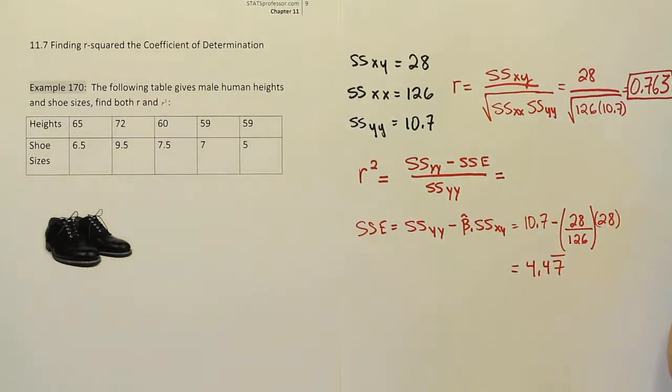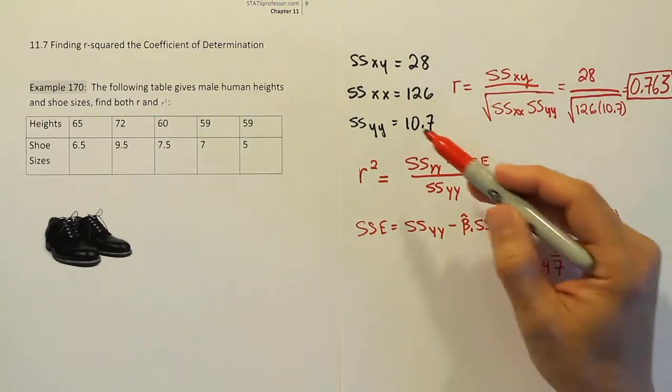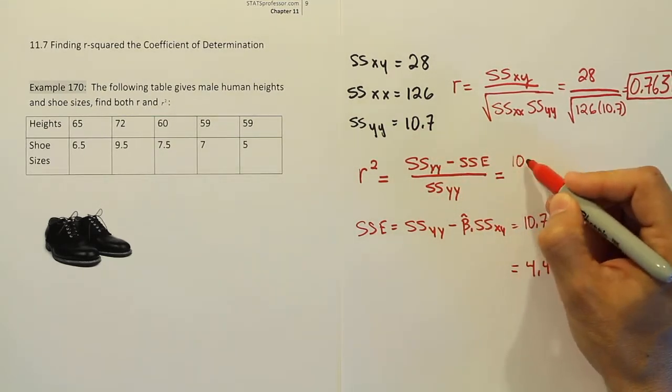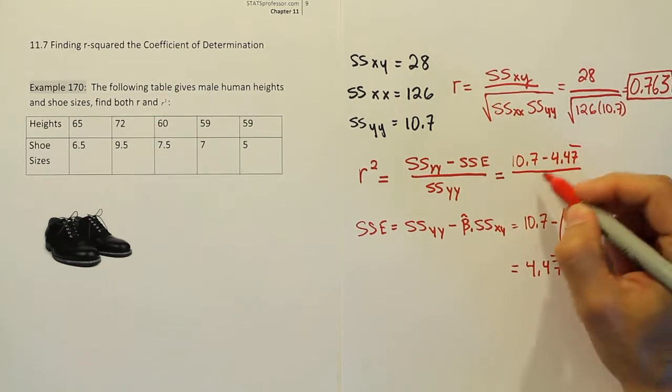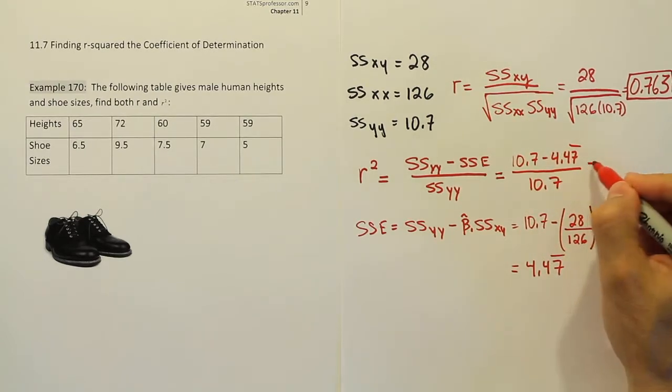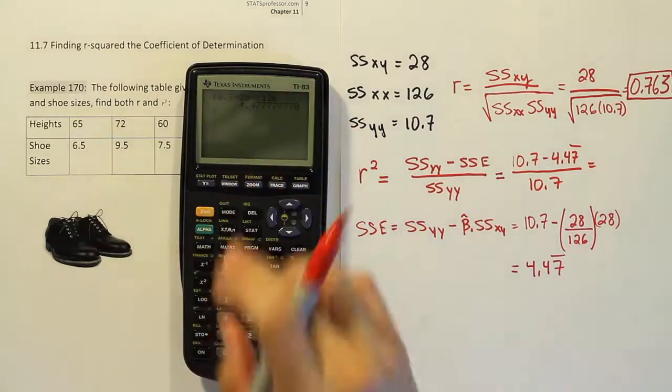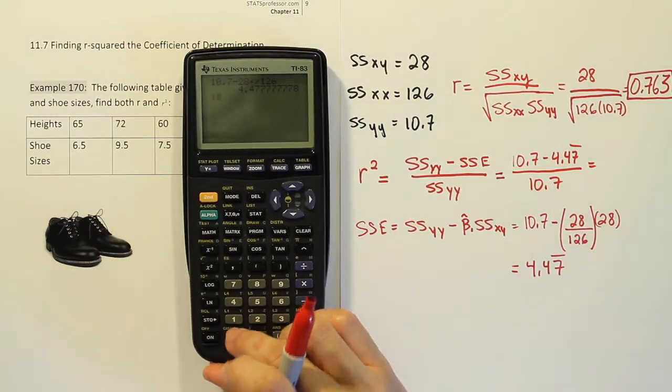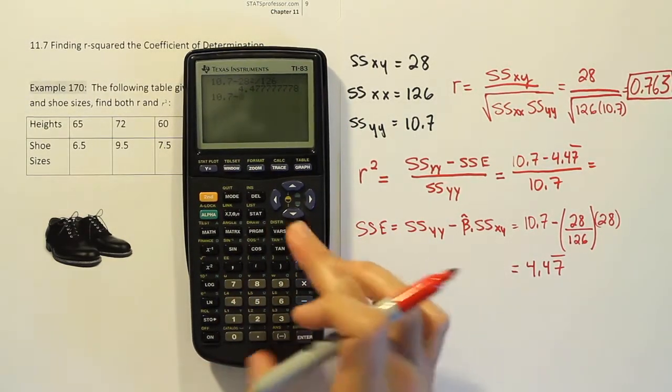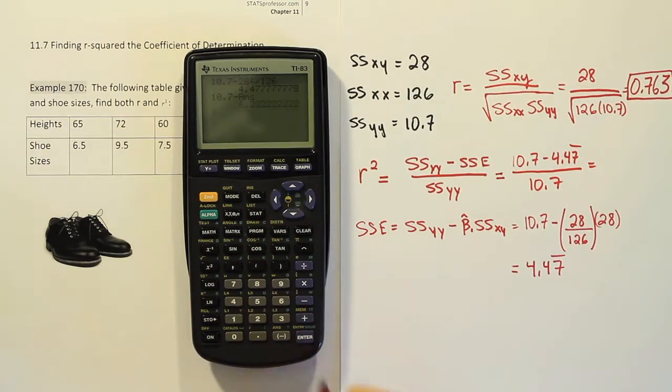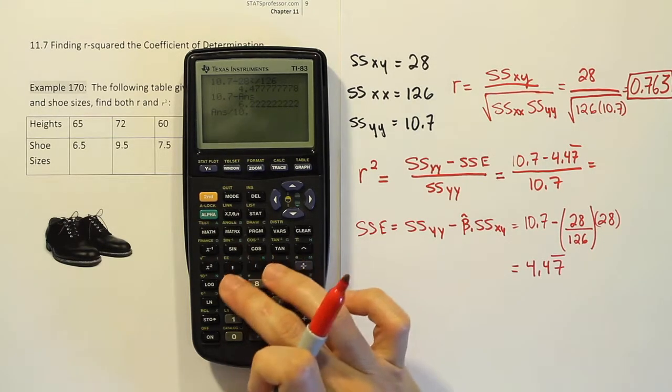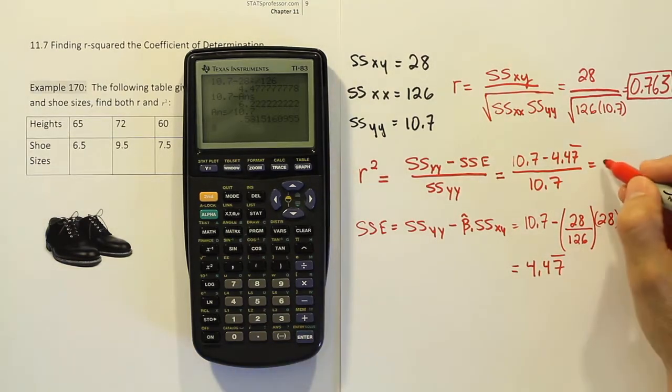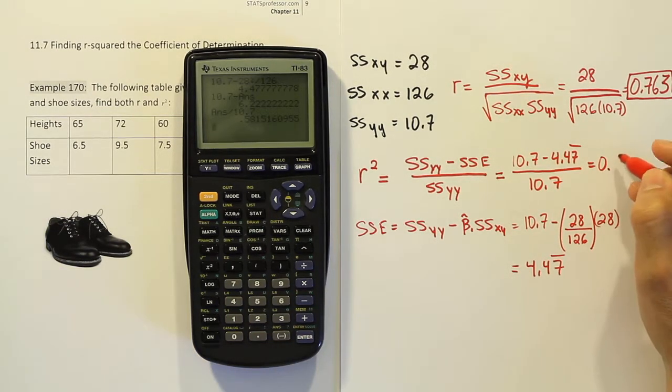All right. Now once we have sse, then we plug that in to finish up the problem. We're going to have the y sum of squares, which is 10.7. We're going to subtract off the 4.47 repeating, and we're going to divide it by 10.7. Let's see what that ultimately gives us for our squared value. So we'll have 10.7, 10.7, minus the quantity we just found. I have that in my calculator still, so I'll just do minus the answer, and then I'll divide that by 10.7. So I get 6.2 repeated divided by 10.7, and when I'm done with that, I get finally the answer 0.582.